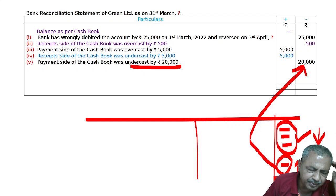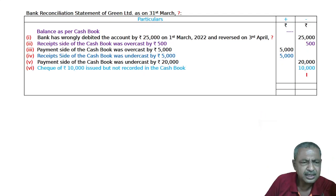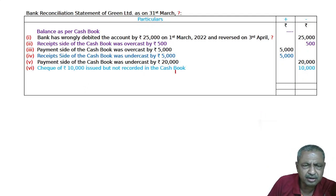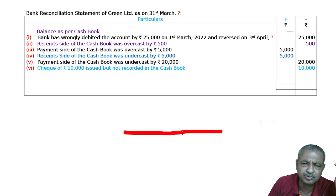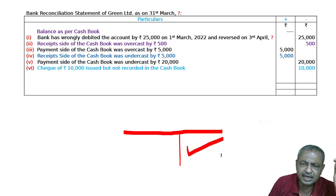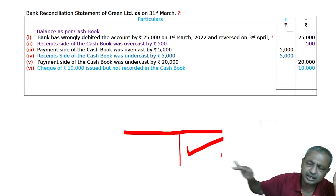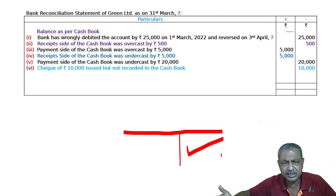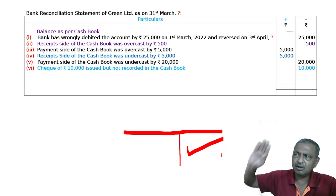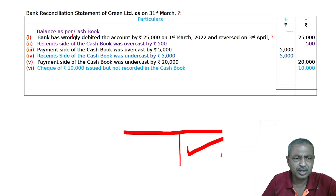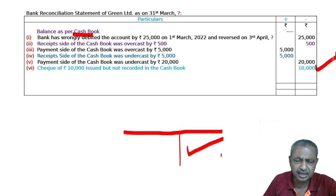Sixth: a check was issued for 10,000 but not recorded in the cashbook. If a check was issued, we had to write it in the cashbook on the payment side. Since it was not recorded, the cashbook balance was not reduced. But the bank balance was reduced when the check was issued, so we deduct it.